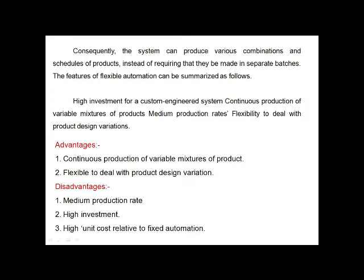The system can produce various combinations and mixes of products instead of requiring that they be made in separate batches. The features of flexible automation include: high investment for custom engineered systems, continuous production of variable mixes of products, medium production rate, and flexibility to deal with product design variations. Advantages: continuous production of variables, mixture of products, flexible to deal with product design variations. Disadvantages: medium production rate, high investment, high unit cost relative to fixed automation.